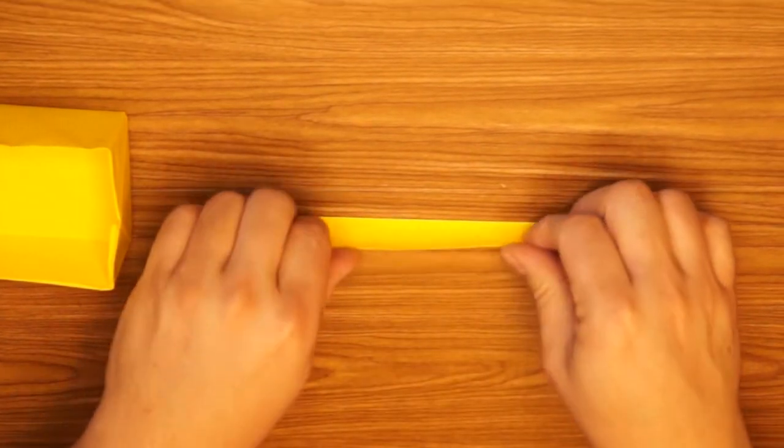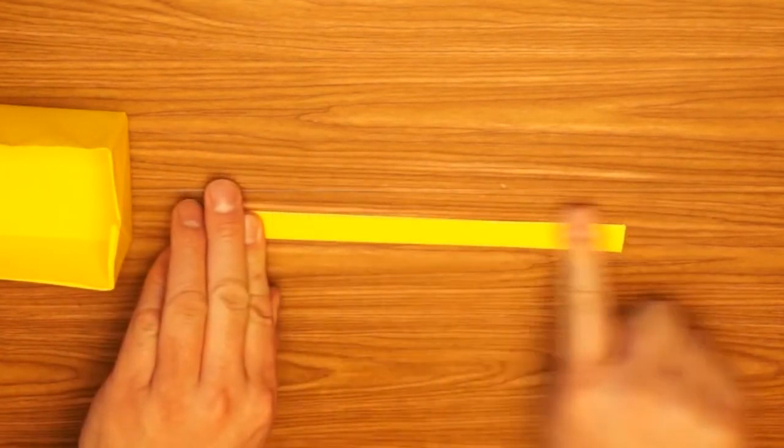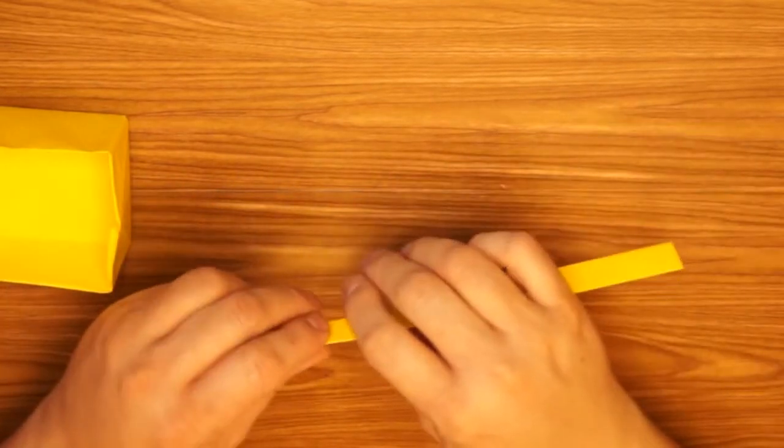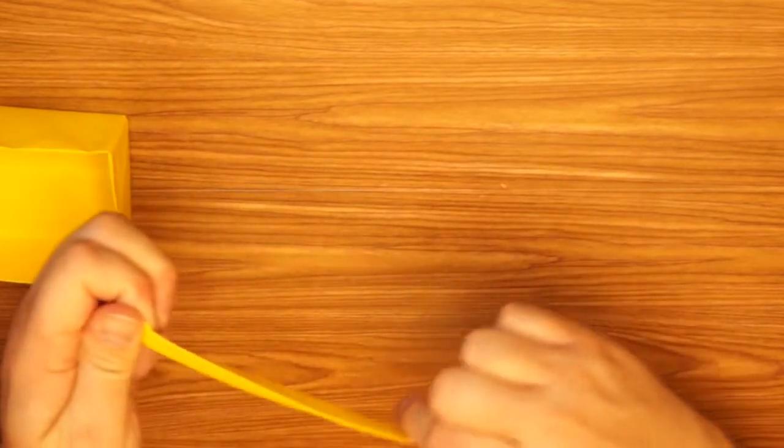Fold it in half. And this is going to be the handle for the basket. I'm going to run it between my fingers here so that I can get it to make a good curve for the handle.